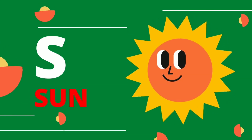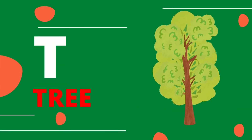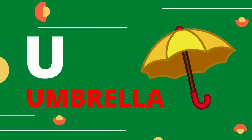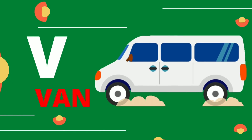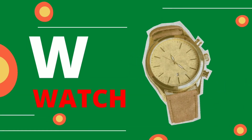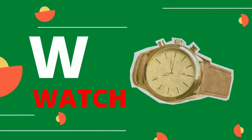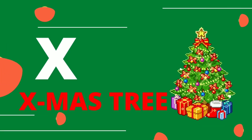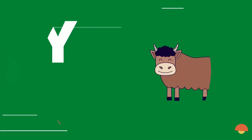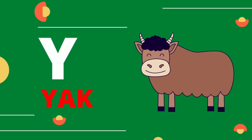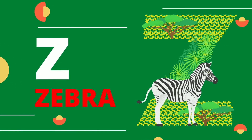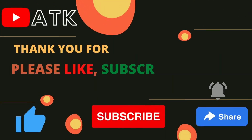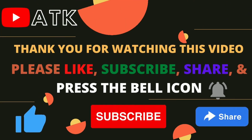S for Sun. T for Tree. U for Umbrella. V for Van. W for Watch. X for X-mas Tree. Y for Yak. Z for Zebra.